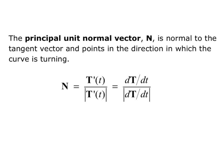The formula for capital N is the derivative of the unit tangent vector divided by the magnitude of the derivative of the unit tangent vector. You could write capital T prime of lowercase t divided by the magnitude of capital T prime of lowercase t, or d capital T over d lowercase t divided by the magnitude of d capital T over d lowercase t. Either way is correct — it's the derivative of the unit tangent divided by the magnitude of the derivative of the unit tangent.